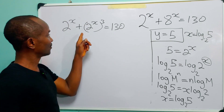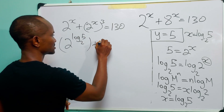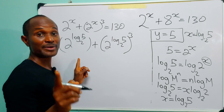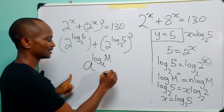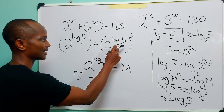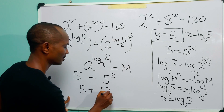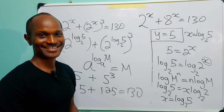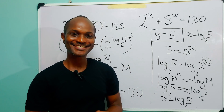Now we can check this. We have 2 raised to power log base 2 of 5, plus 2 raised to power log base 2 of 5, all cubed. Remember that a raised to power log base a of any number is simply equal to that number. So 2 raised to power log base 2 of 5 is simply 5, and likewise the second term gives 5 cubed, which is 125. So we have 5 plus 125, which equals 130. The left-hand side equals the right-hand side. With that, we come to the end of today's exercise. I hope you've learned something and I hope you've been entertained. See you in the next one.